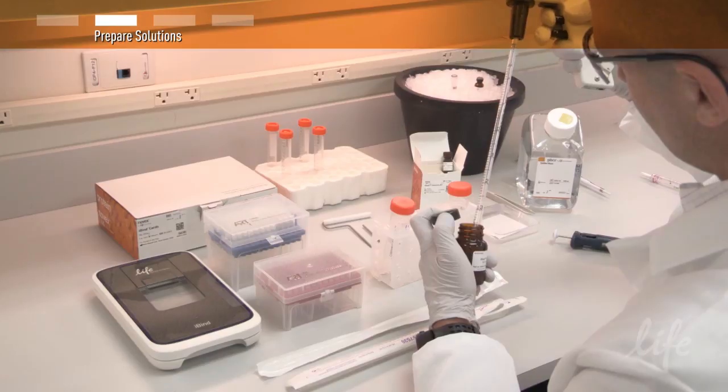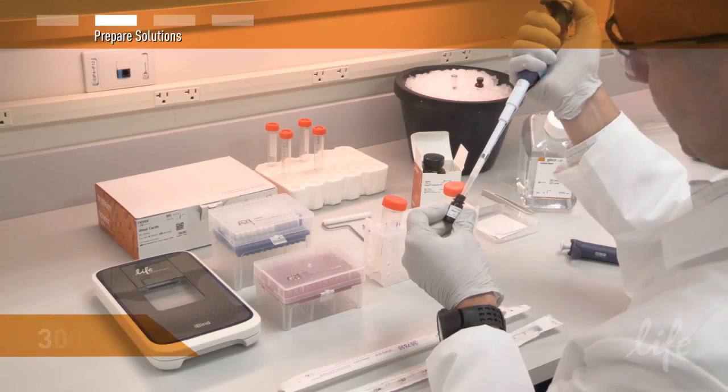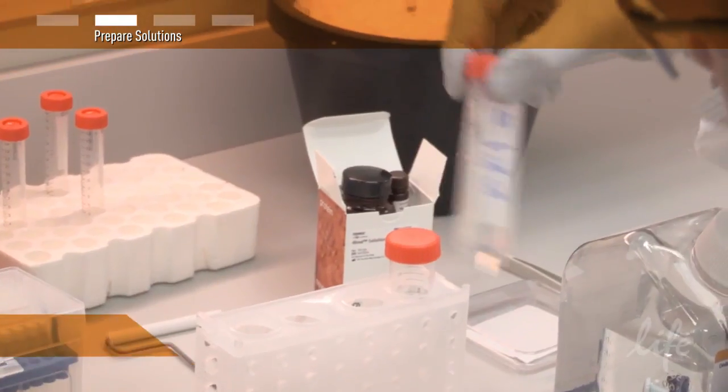Then add 6 milliliters of the iBind buffer, followed by 300 microliters of the iBind additive. Then swirl to mix.